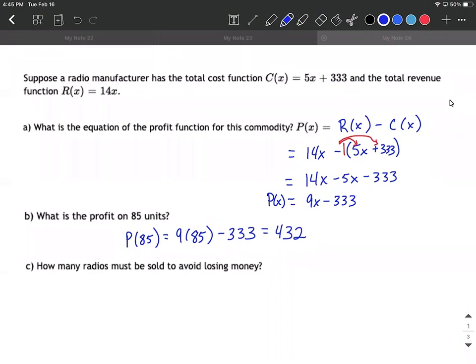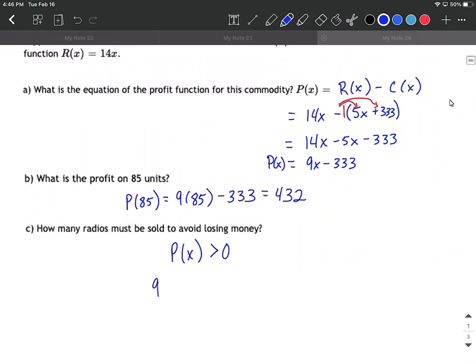And then in part c, we need to find how many radios must be sold to avoid losing money. We want to have our profit be positive - in a math sense, that means greater than zero. So we can say our profit function, 9x minus 333, has to be greater than zero. All I did there was replace P(x) with what we said it was equal to.